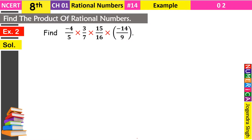इनको solve करने के लिए जो method मैंने बताया था: numerators को आपस में multiply करो और denominators को आपस में multiply करो, और जो भी result आएगा वो हमारा answer है। लेकिन यहाँ थोड़ा shortcut भी है, हमको कुछ cutting भी करनी पड़ेगी। सबसे पहले हमने एक division का sign लगा दिया और into के signs as it is carry कर लेते हैं।